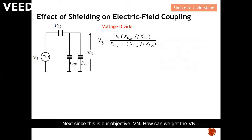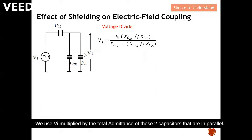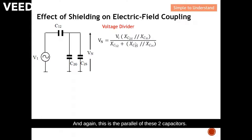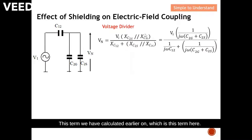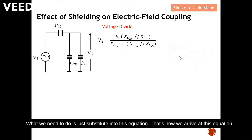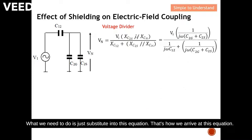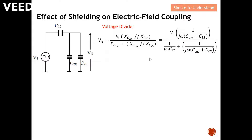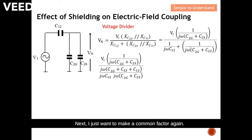Since Bn is our objective, how do we get Bn? We apply the voltage divider rule: Vin multiplied by the total admittance of these two capacitors in parallel, over the admittance of C12 plus the parallel combination. We have calculated this parallel admittance term earlier, so we simply substitute it into the voltage divider equation — that's how we arrive at this expression.